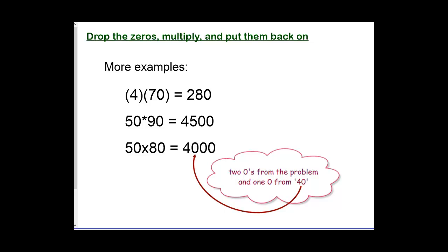50 times 80 has two zeros originally. Now 5 times 8 provides one zero, so we get 40, and two additional zeros for a total of three zeros.